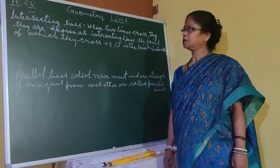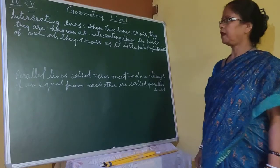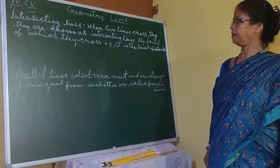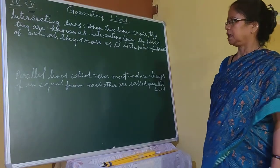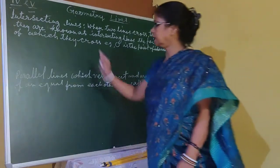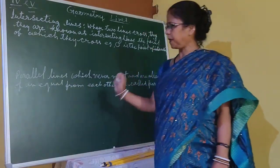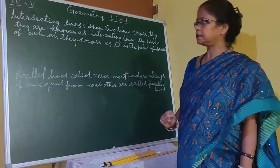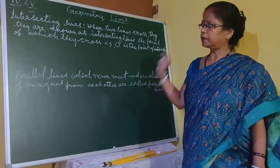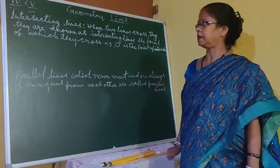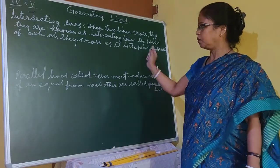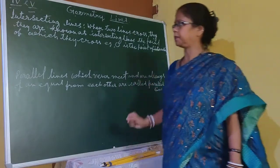Now see the different types of lines. There are intersecting lines, parallel lines, and perpendicular lines — so many types of lines are here. Now I am explaining two of them.